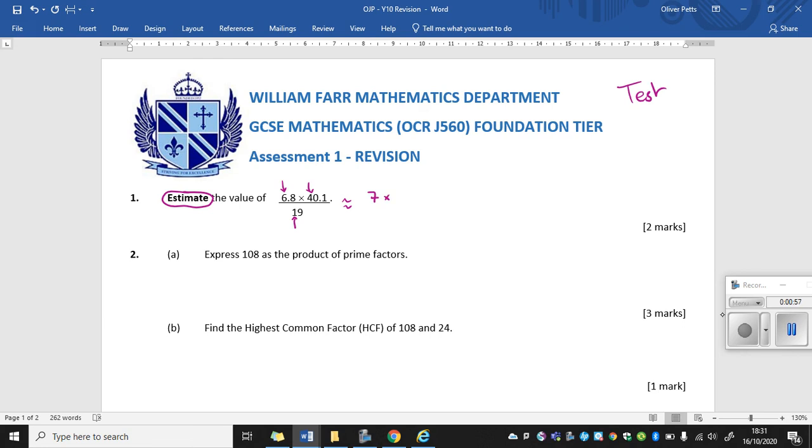40.1, well, 4 is in the tens column. So we're going to round that to the nearest 10. So that's going to become 40. And in 19, the 1 is also in the tens column. We're going to round 19 to the nearest 10. So we're going to round that to 20.